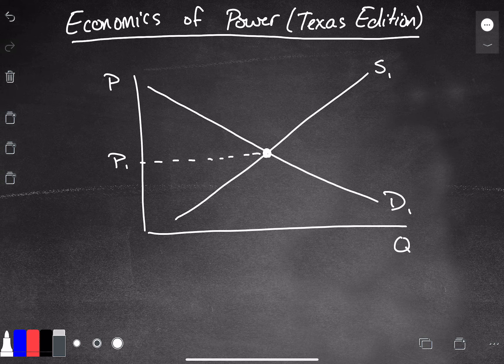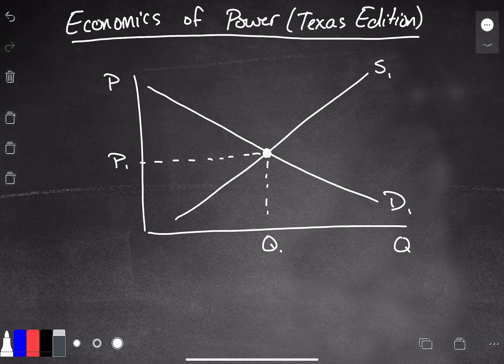We have our initial equilibrium price and our initial equilibrium quantity. But with the cold temperatures, people are probably going to be running their heating machines or their heaters a lot more. They might be buying space heaters, anything like that to try to stay warm.